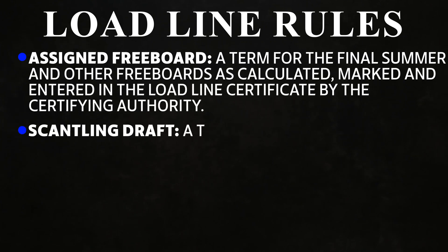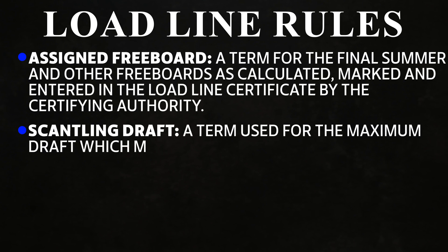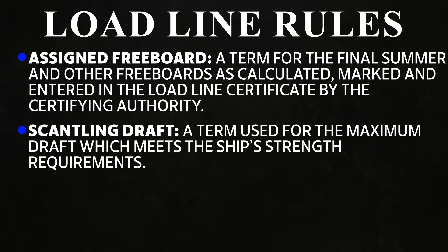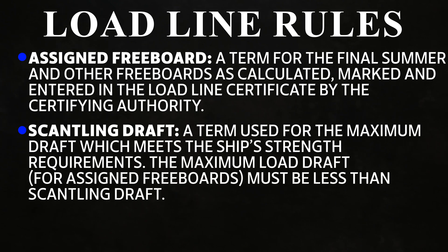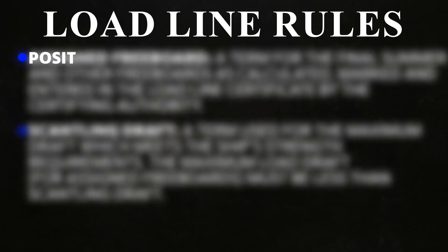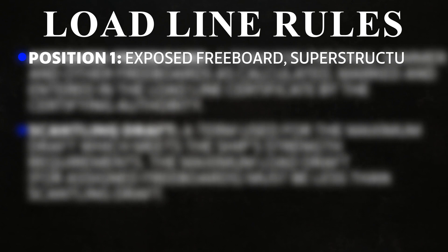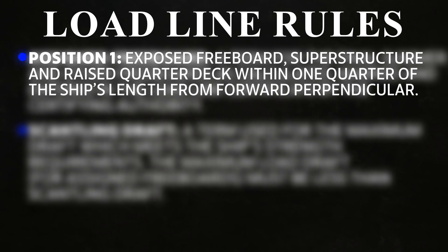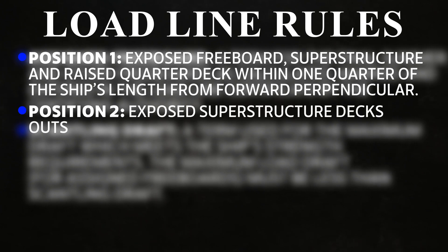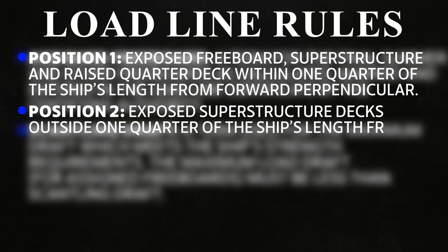Scantling Draft is the maximum draft which meets the ship's strength requirements. The maximum load draft for assigned freeboards must be less than the Scantling Draft. Position 1: exposed freeboard, superstructure and raised quarter deck within one quarter of the ship's length from the forward perpendicular. Position 2: exposed superstructure decks outside one quarter of the ship's length from the forward perpendicular.